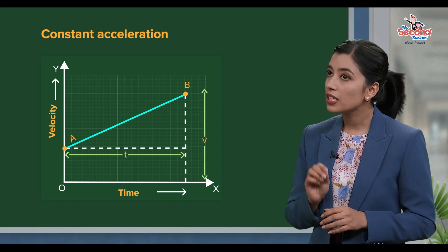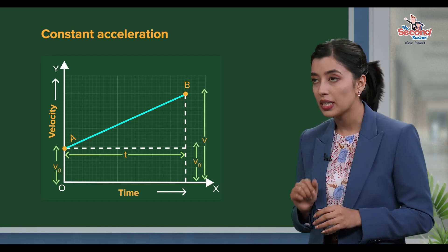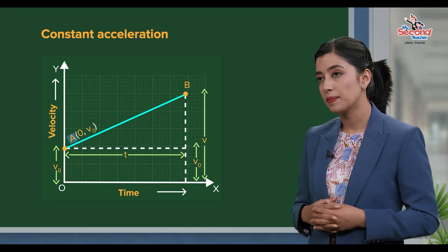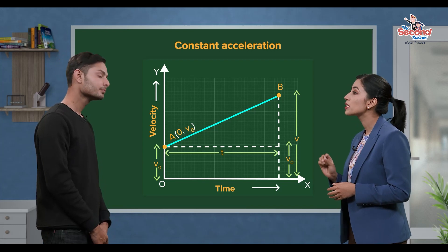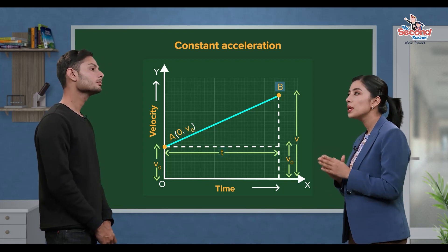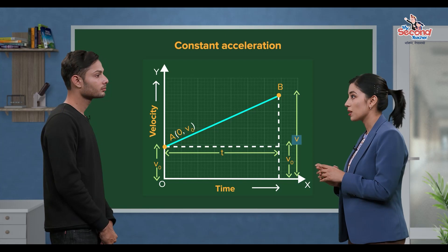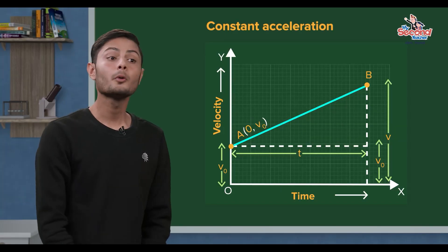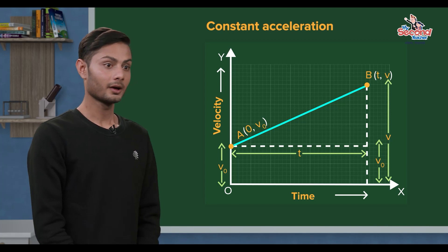The initial velocity of this object is V0, so point A has coordinates (0, V0). Point B has coordinates (T, V), where V is the final velocity at time T.